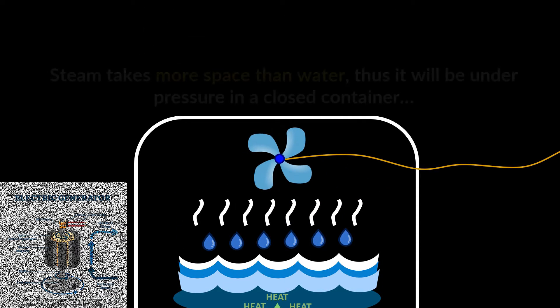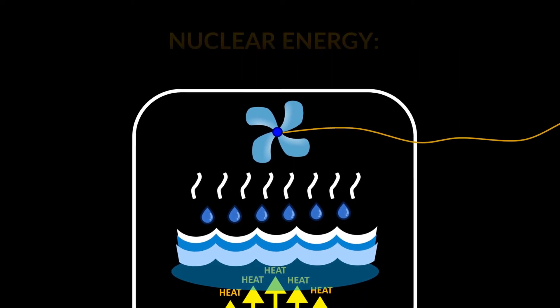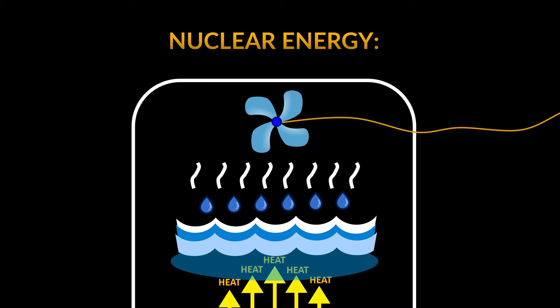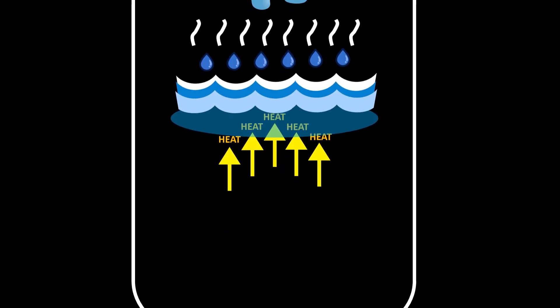Nuclear power plants do the same thing. Heat is produced, which is used to heat water into pressurized steam, which drives a turbine generator. The key difference between a nuclear power plant and a coal burning power plant is the way they produce the heat.